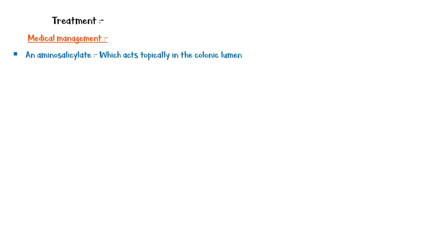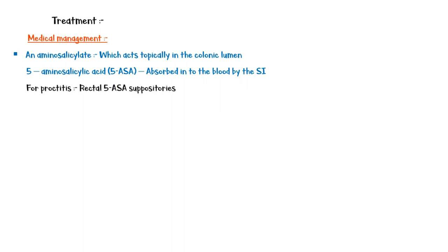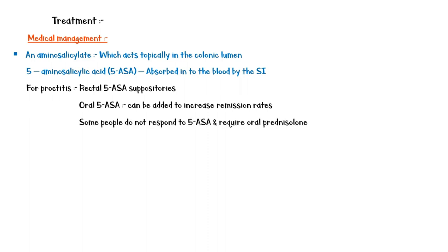The mainstay of medical management of ulcerative colitis is an aminosalicylate, which acts topically in the colonic lumen. The active moiety of the drug is 5-aminosalicylic acid, which is absorbed into the blood by the small intestine. Therefore, various aminosalicylate preparations are available to deliver the drug to the colon. For proctitis, rectal 5-ASA suppositories are the first-line treatment. Oral 5-ASA can be added to increase remission rates. However, some people may not respond well to this drug and require oral prednisolone.